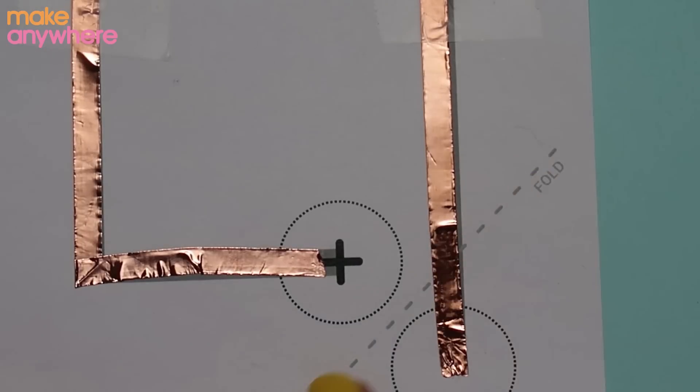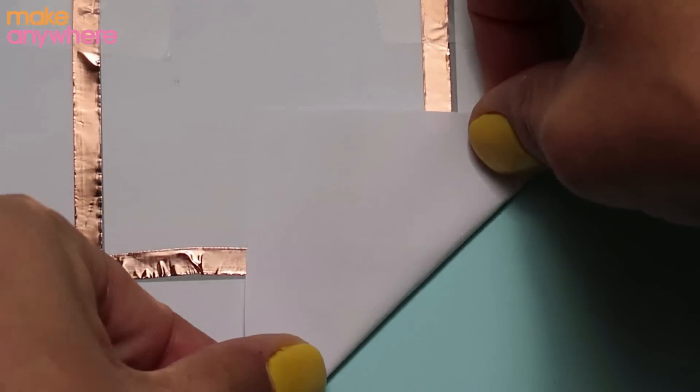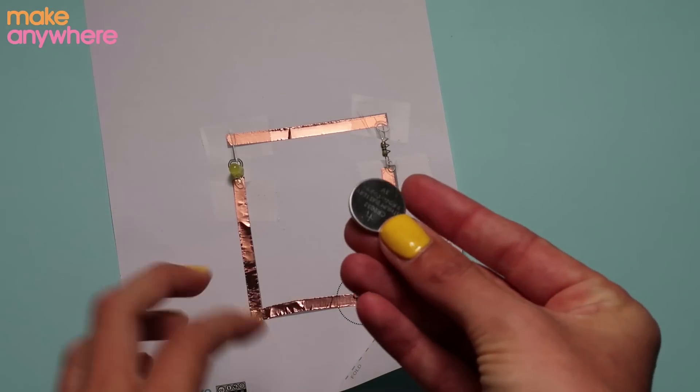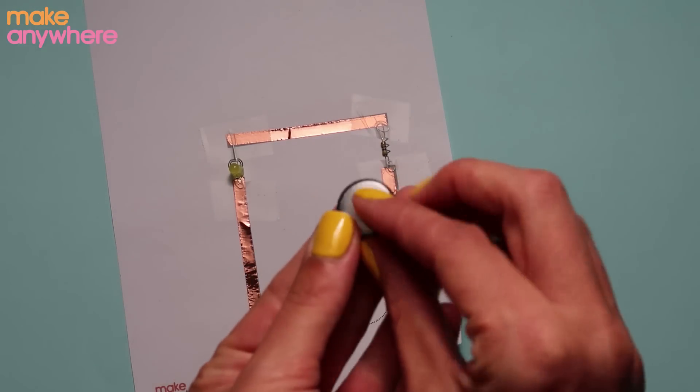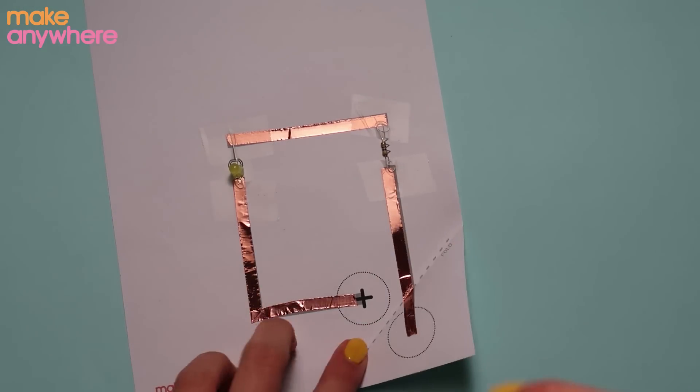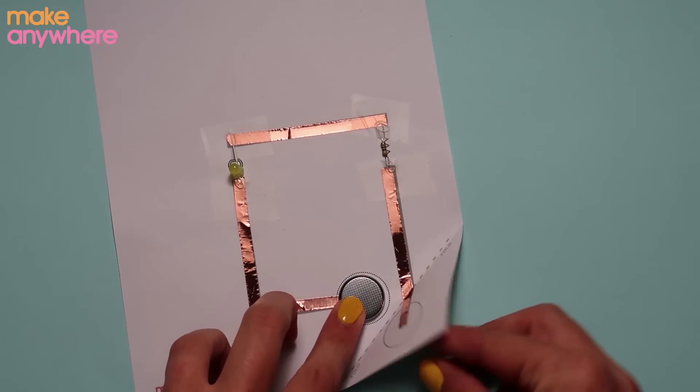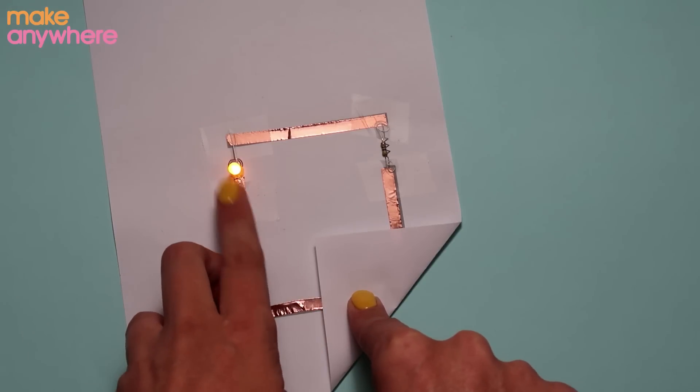Now we need to fold the corner and let's test this out. We'll take our cell battery, the shiny side is positive and the bumpy side is negative. So shiny side onto the positive and bending over and your LED should light up.